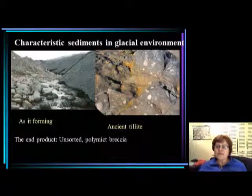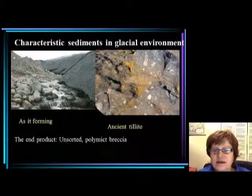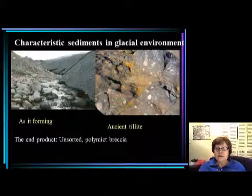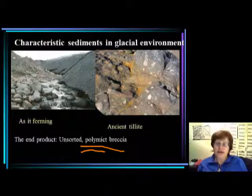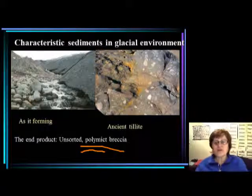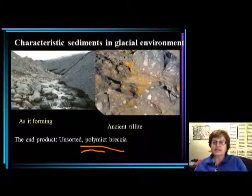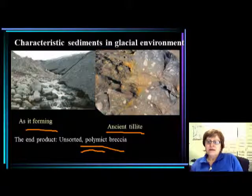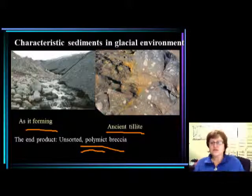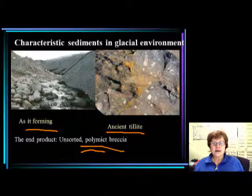The sediment that forms in a glacial environment is very immature, unsorted, and very polymict — polymict means it has every kind of rock from the surrounding area. So if the glacier comes from a granite mountain side and goes through all kinds of rock, everything will be represented in the glacial till. We call it tillite. Just remember: tillite is a typical glacier deposit — very unsorted, very immature, and very polymict, meaning every kind of rock the glacier went through will be represented.